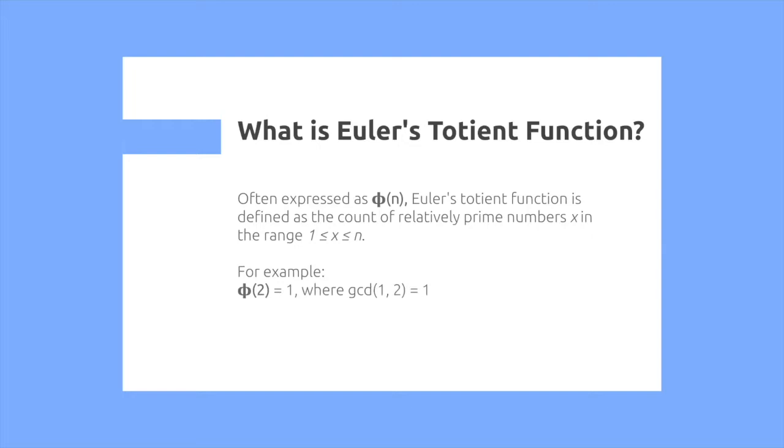For example, phi of 2 is equal to 1, because the GCD of 1 and 2 is equal to 1. Phi of 3 is equal to 2, as the GCD of 1 and 3 is equal to 1, and the GCD of 2 and 3 is equal to 1.